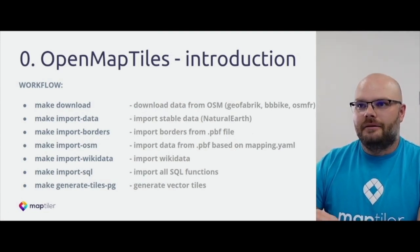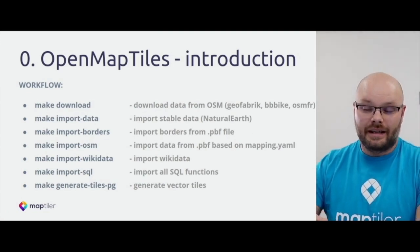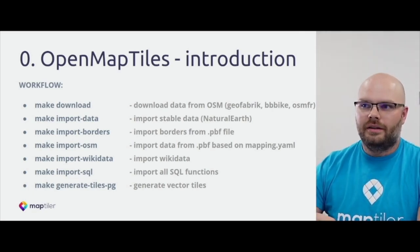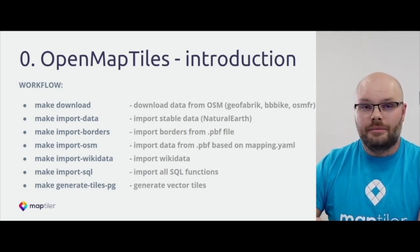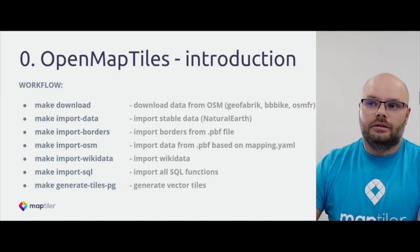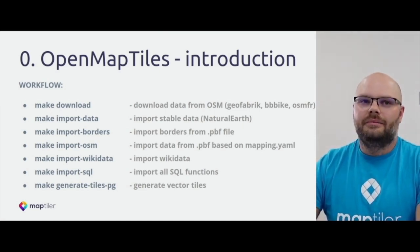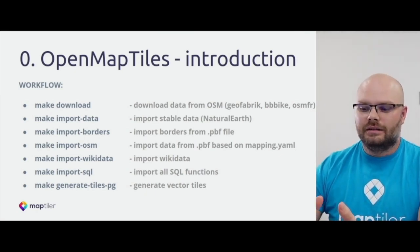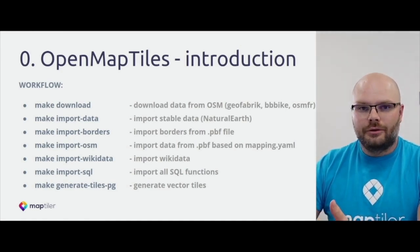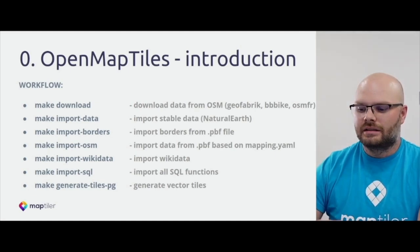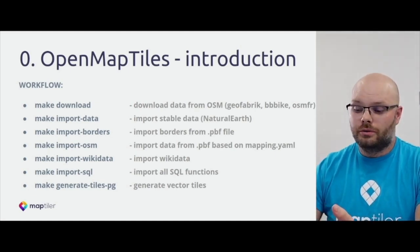If you would like to know more about OpenMapTiles, please come to my presentation on Friday at 10 AM Buenos Aires time. OpenMapTiles has seven Makefile targets which run through the whole project. Starting with download, which downloads data from OpenStreetMap - basically from Geofabrik, OSM.fr, or your own URL or any data source. Then there is a make target 'import-data' which imports stable data like Natural Earth data, used for upper zoom levels - zoom level zero to four or five, depending on the layer.